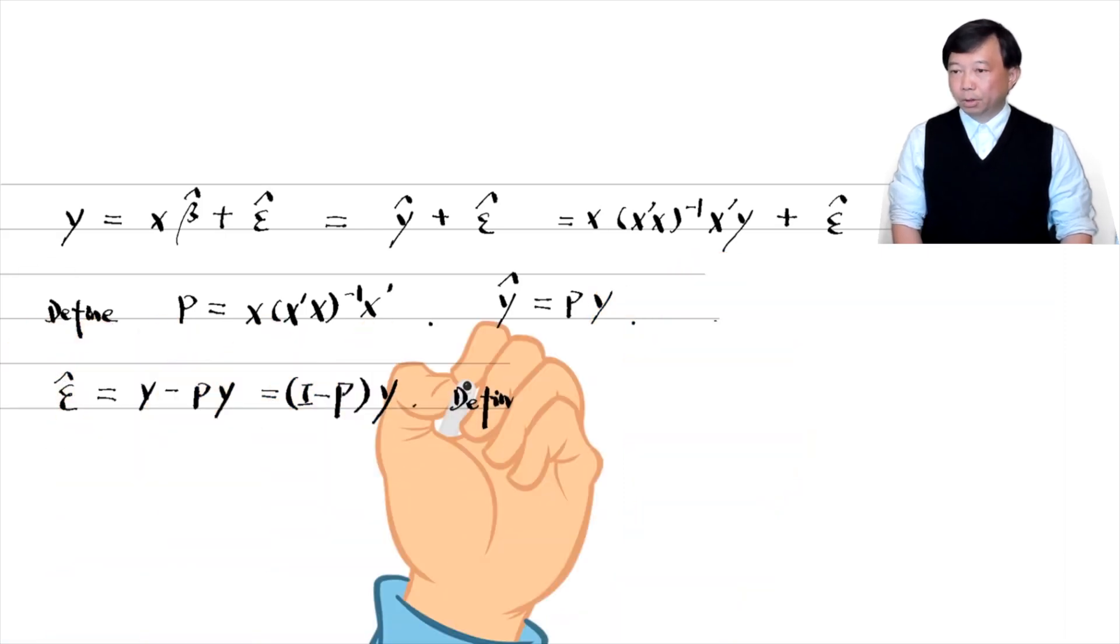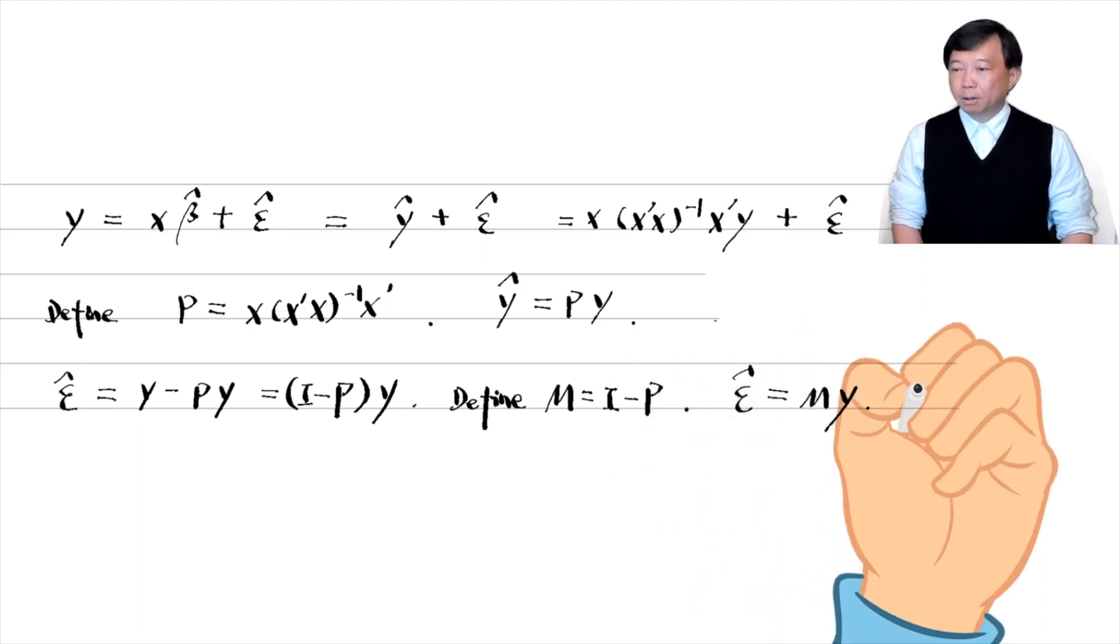The residual epsilon hat equals y pre multiplied by M. The matrix P is formed from x.